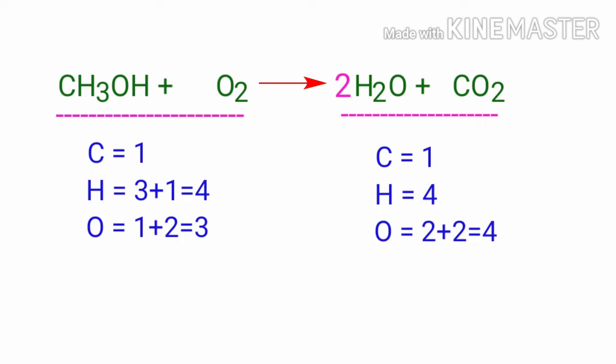The Hydrogen atoms are balanced, but the Oxygen atoms are unbalanced. To balance that, we need to put a coefficient of 3/2 in front of O2.